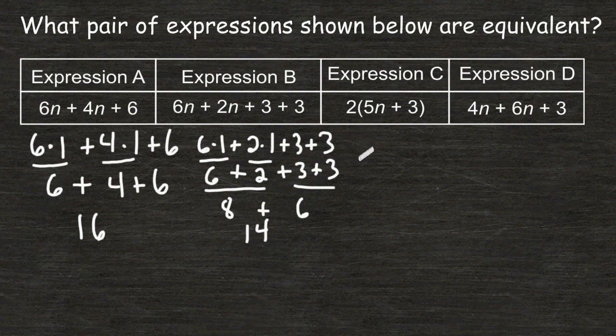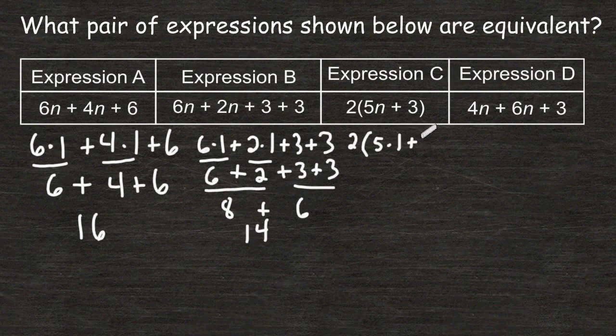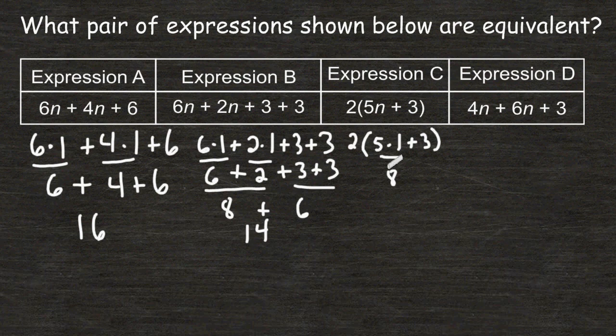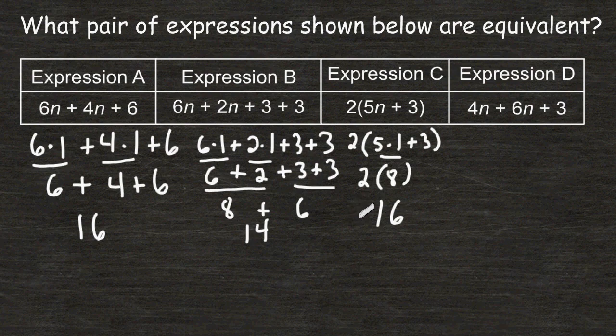Let's plug the number 1 in for n for expression C. So we have 2 times the quantity of 5 times n, but we are going to substitute that n with the number 1 and then add 3. So we have to do what's inside the parentheses first, and 5 times 1 is 5, and 5 plus 3 is 8. And we have to multiply 8 by 2, and 2 times 8 is 16. So expression C has a value that is equivalent to expression A, therefore expression A is equal to expression C.